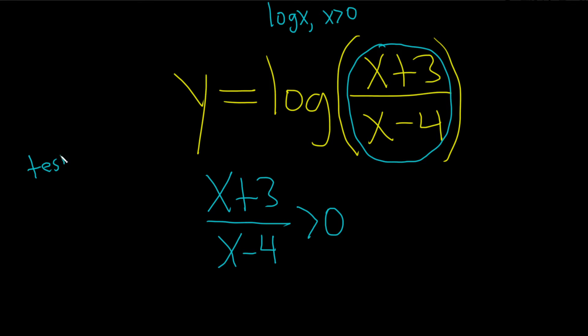So the test point method says that the first step is to get a single term on one side and 0 on the other. That step is already done for us in this problem.